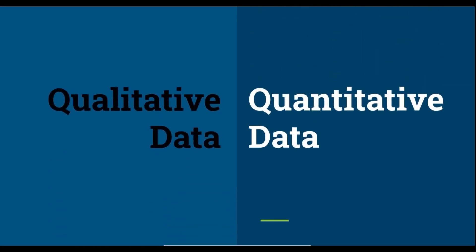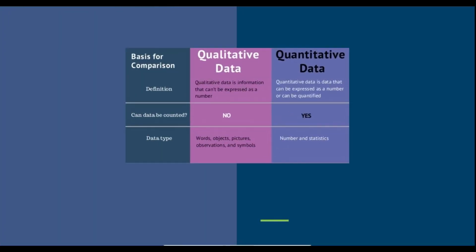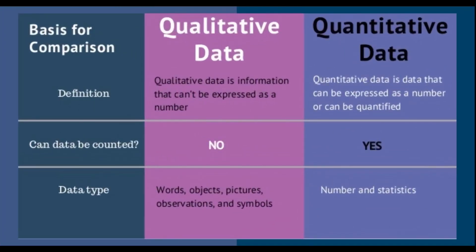In collecting the data that you need, as a researcher, you should learn and be familiar with what type of data you can gather — either qualitative data or quantitative data. Based on the definition, qualitative data is information that cannot be expressed as a number. Data cannot be counted. The data type could be words, objects,